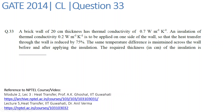We are looking at question 33 of GATE 2014 Chemical Engineering paper. A brick wall of 20 centimeter thickness has thermal conductivity of 0.7 watt per meter per kelvin. An insulation of thermal conductivity 0.2 watt per meter per kelvin is to be applied on one side of the wall so that the heat transfer to the wall is reduced by 75%.